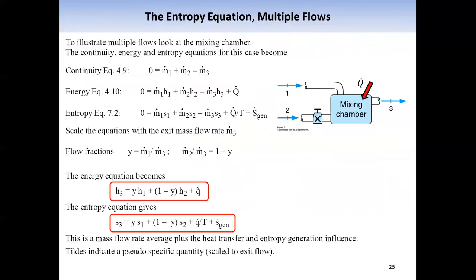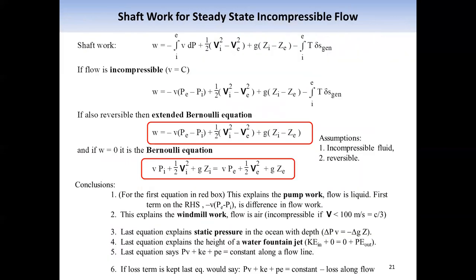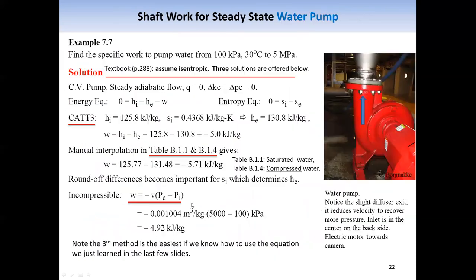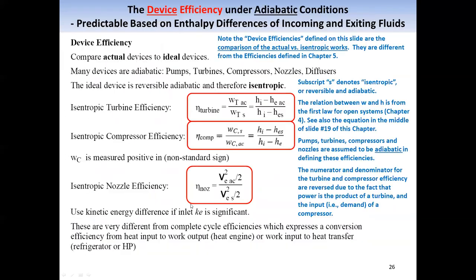For a nozzle, the efficiency can be defined as the comparison of the actual exit velocity to that of an idealized nozzle. There is no entropy loss for an idealized nozzle, so its exit velocity will be higher than the actual nozzle's.